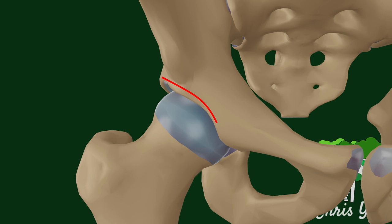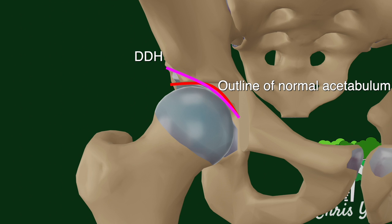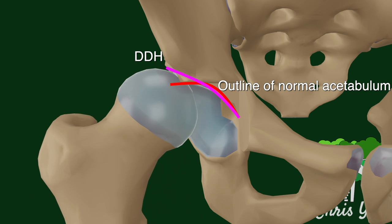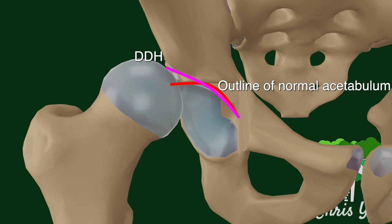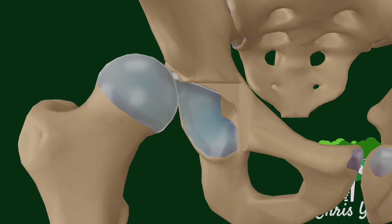In a normal hip, the acetabulum has a sharp margin, allowing it to form a deep socket for the femoral head. In DDH, the posterior superior rim of the acetabulum loses this acute angle and becomes flattened and thickened. This results in a shallowed acetabulum, allowing the femoral head to slide in and out freely, usually into a proximal and lateral displacement.